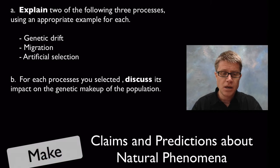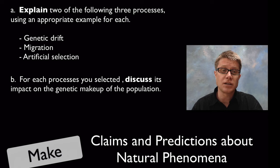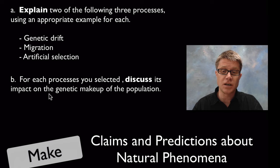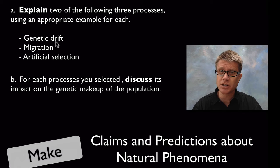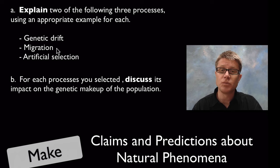They also want you to make claims and predictions about natural phenomena. Explain two of the following three processes using an appropriate example for each, and discuss each one's impact on the genetic makeup of a population. Genetic drift decreases population size — examples include the northern elephant seal or cheetah bottleneck. Migration is movement into or out of an area. Artificial selection, like with fast plants, is when we choose who mates with whom.